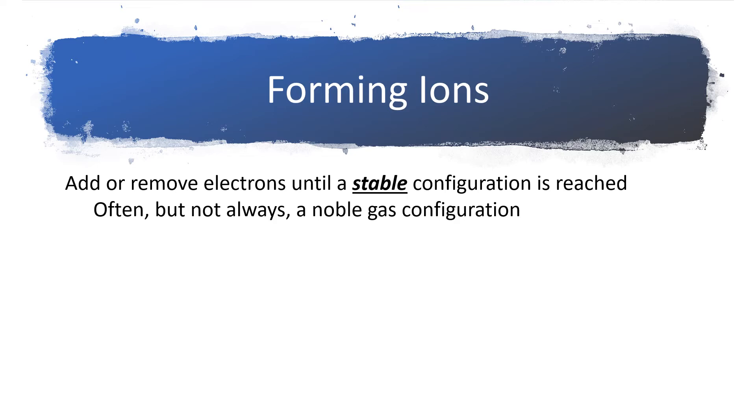Ions will be formed by adding or removing electrons until a stable configuration is reached. Usually, but not always, this configuration will be a noble gas configuration, so we're going to reach an octet of electrons.